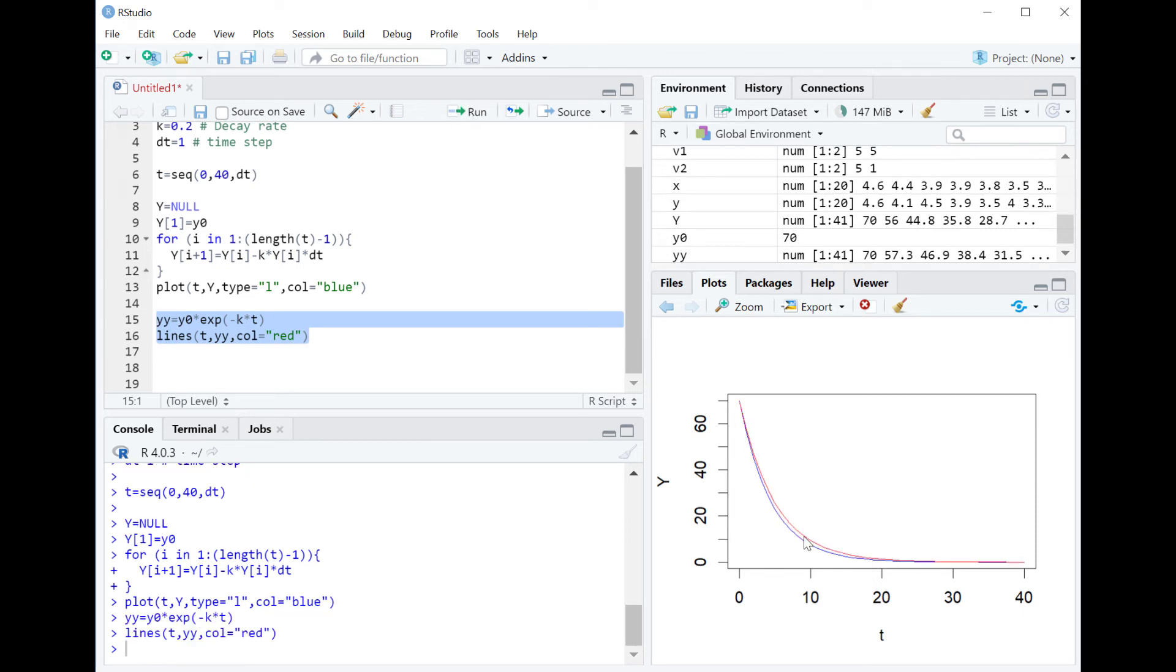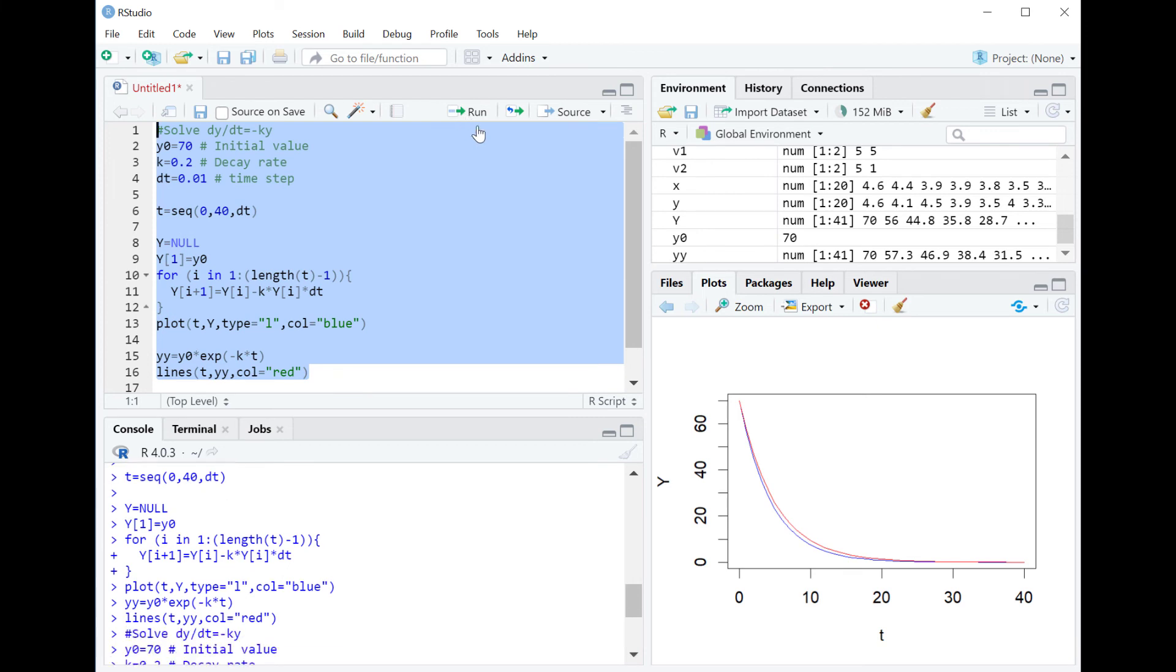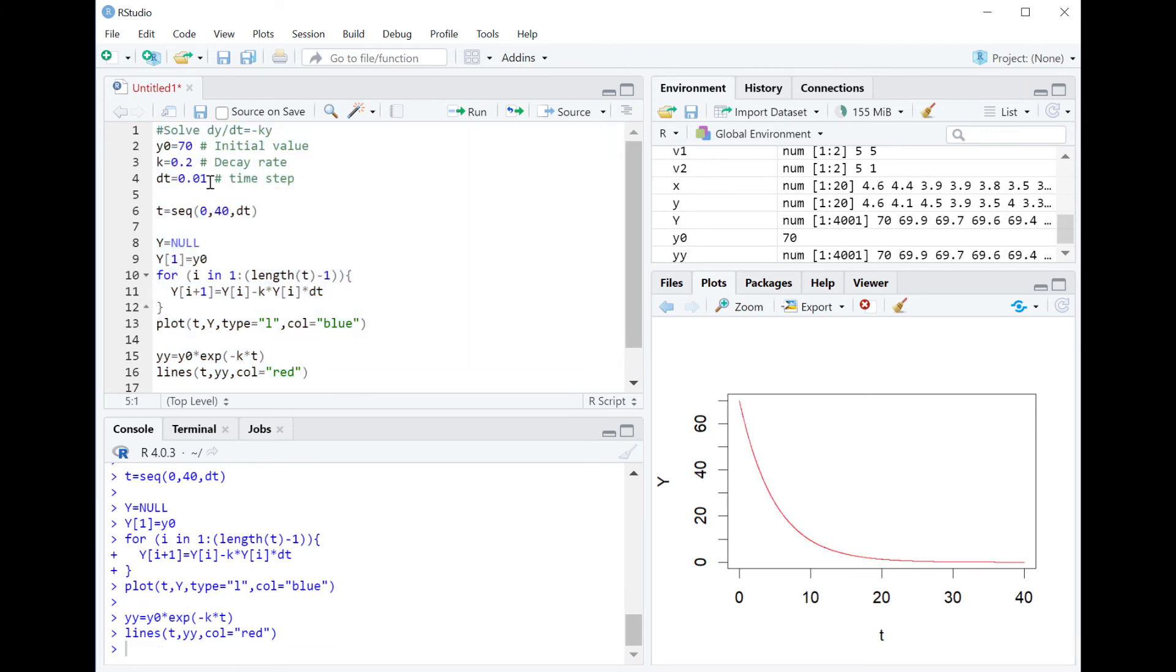And we can see that there is a difference between the red curve and the blue curve. And that is due to that we use a quite big step size. So if we change this to 0.01, for example, we see that they overlap completely here. So when you use Euler's method, you have to use a small step size in order to get accurate output.